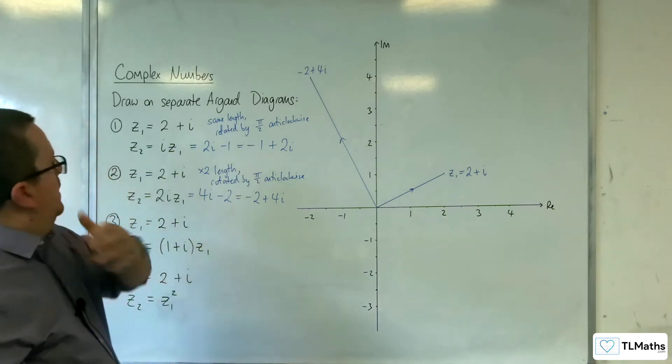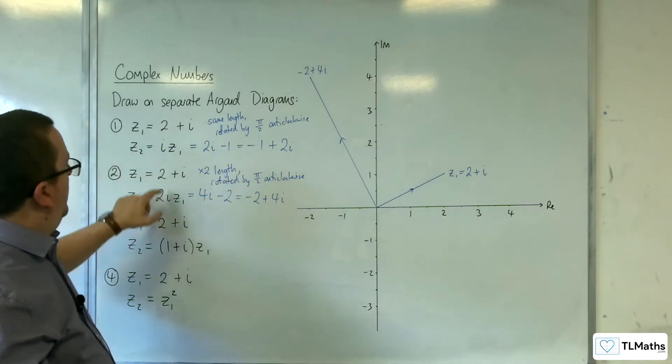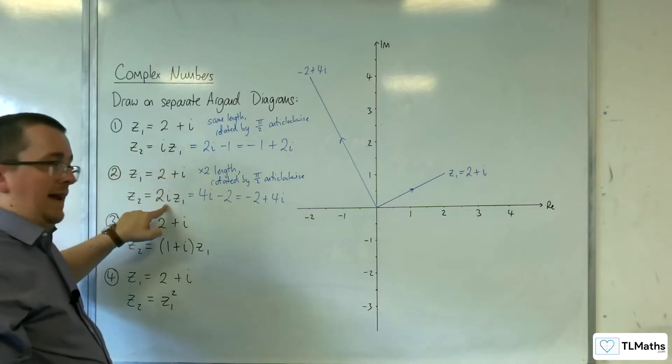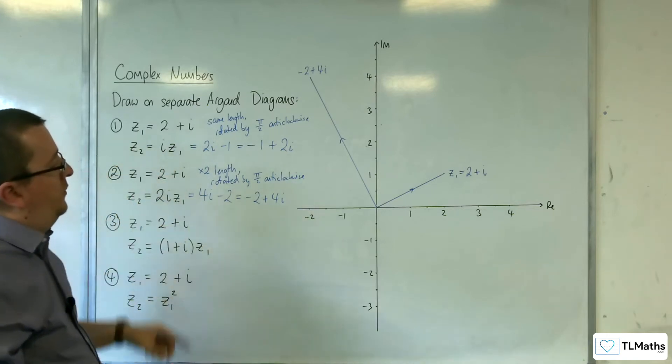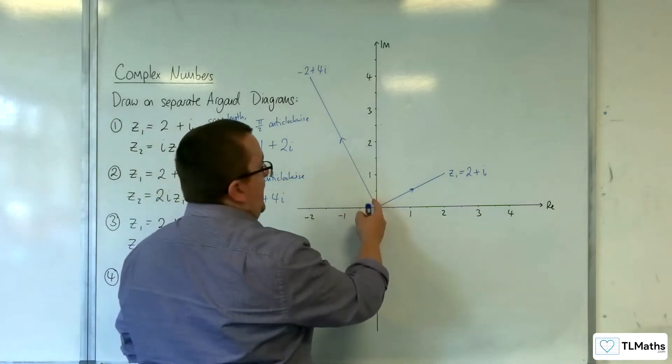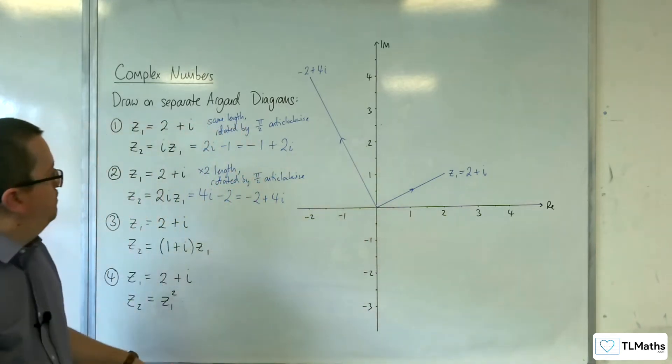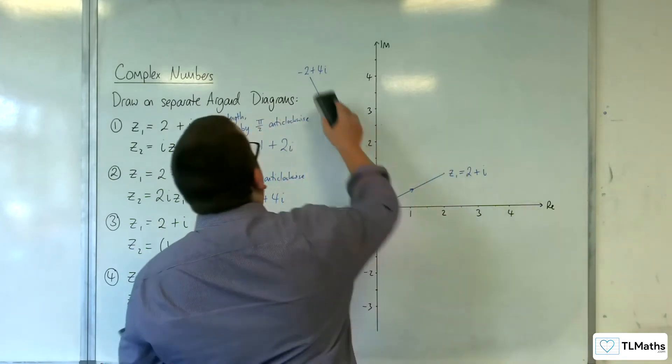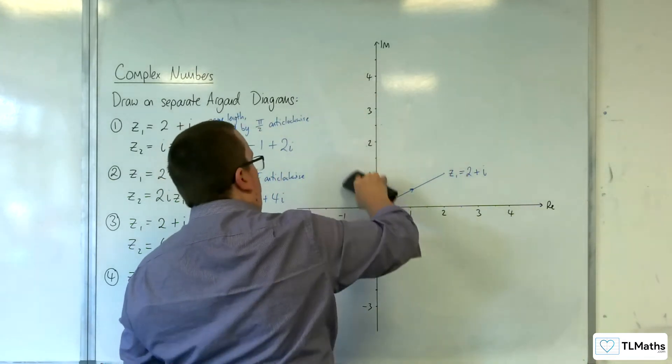Notice how that the π over 2 would be the argument of both i and 2i. So it's like the argument has been added on. Hold that thought.